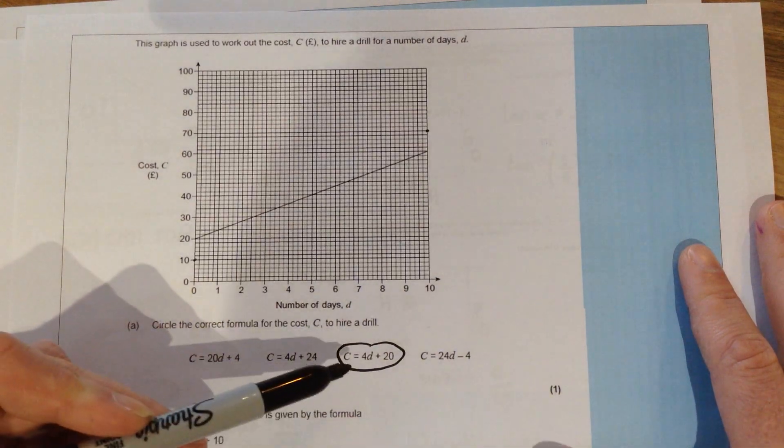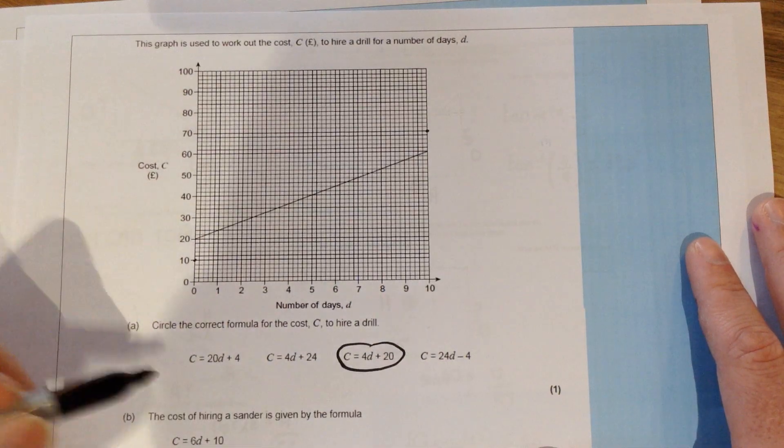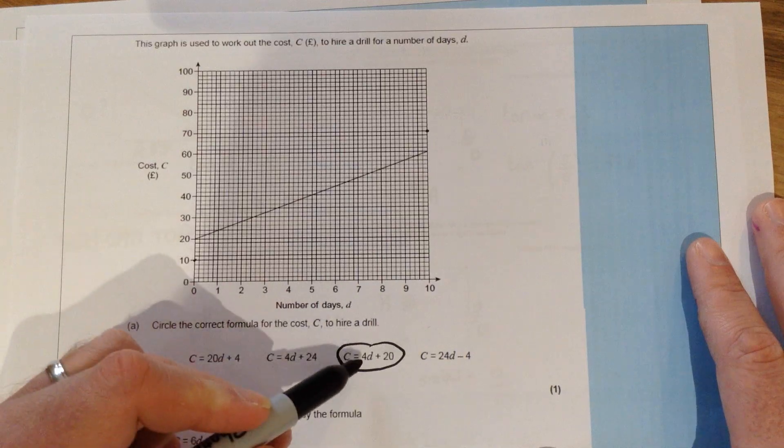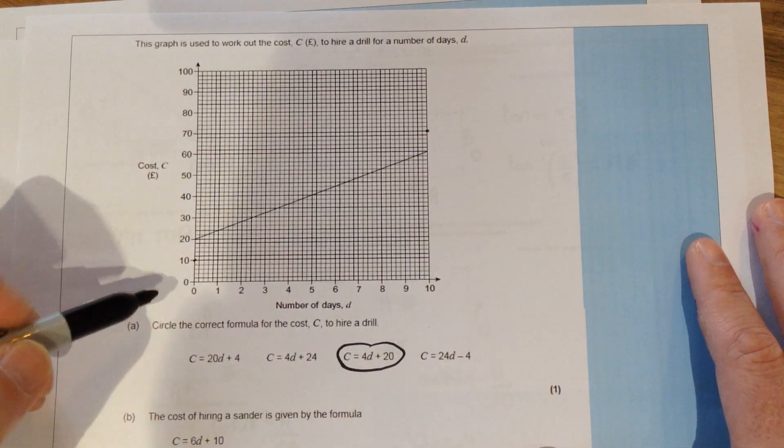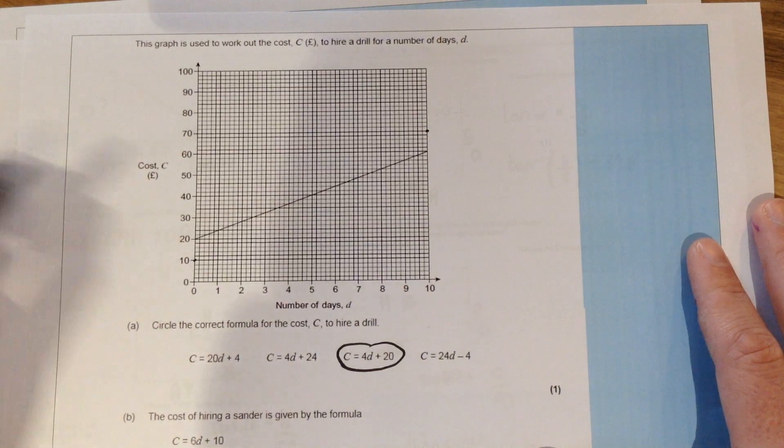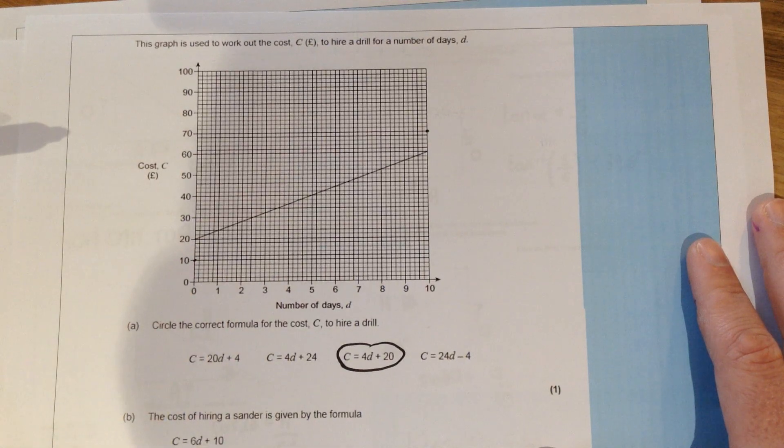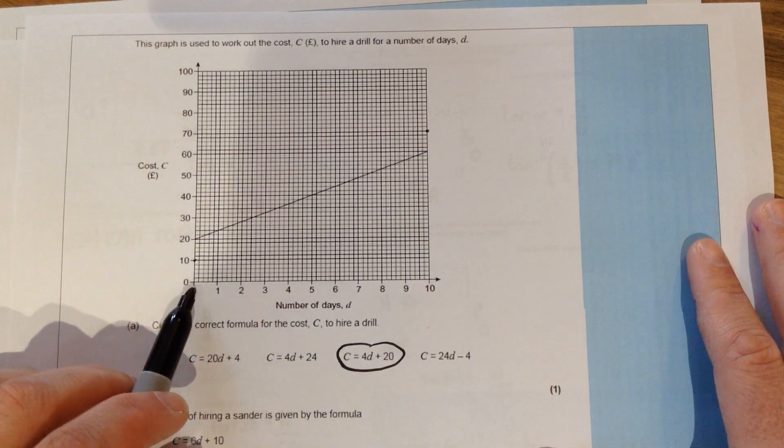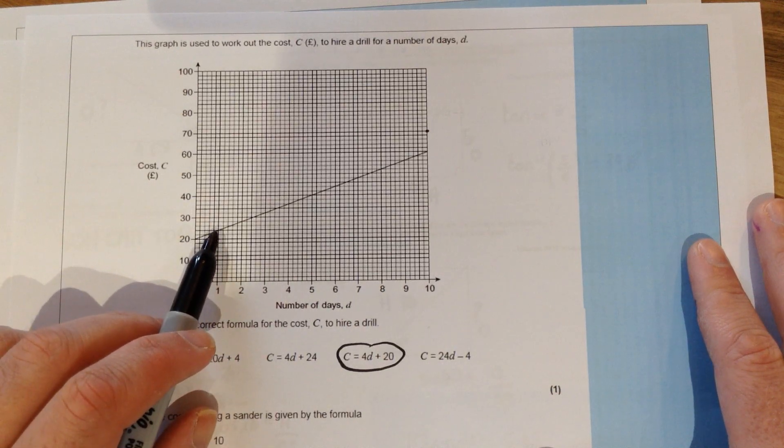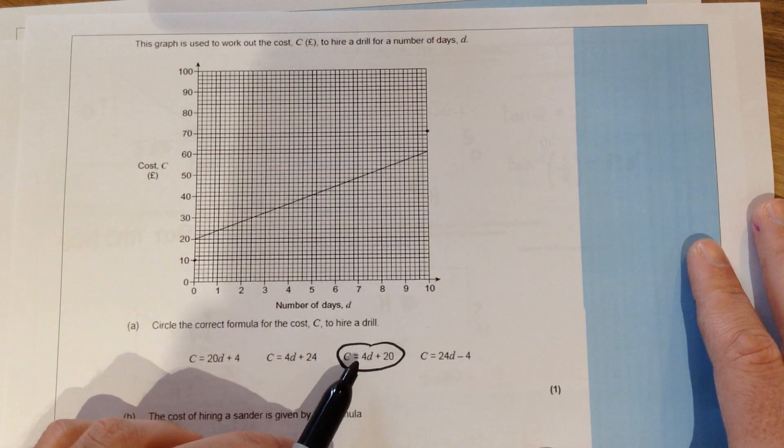Just as a side note to this, another way that we can work out which one of these graphs it would have to be is the letter D in front of it has a number. That number simply represents if I go along one along the day column, along the day axis should I say, how much we're going up on the graph over one day. So here from zero to one, zero to one, we've gone from 20 up to 24. So it's going up by four. That's where that has a 4D in front of it.